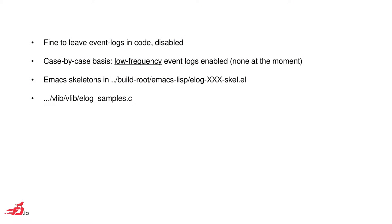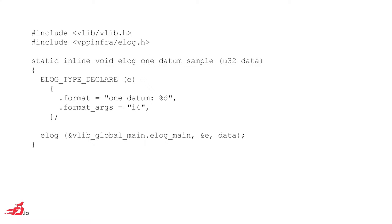Event logs can be useful if you're having issues with link up/downs or wondering why some control-plane-ish thing on occasion takes a long time. If you want to follow along in code, look at vlib/vlib/elog_samples.c. This is the canonical simplest possible way to log an event — a case of logging a single datum with a timestamp.